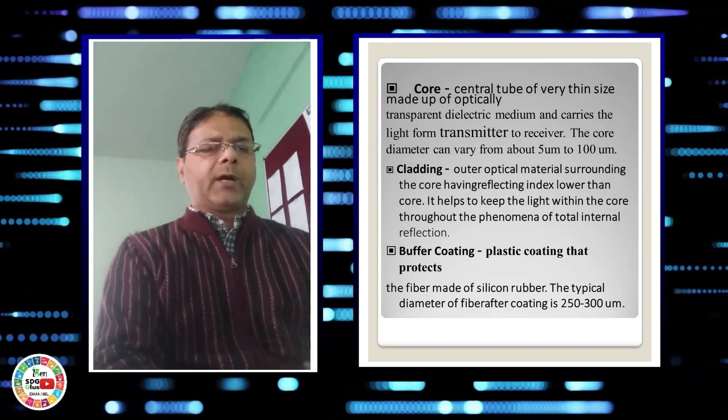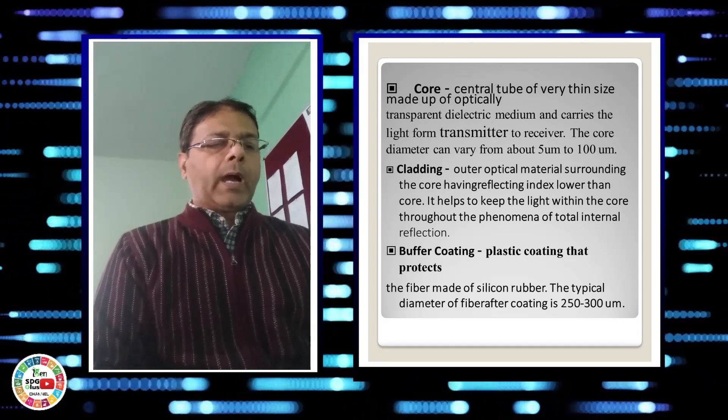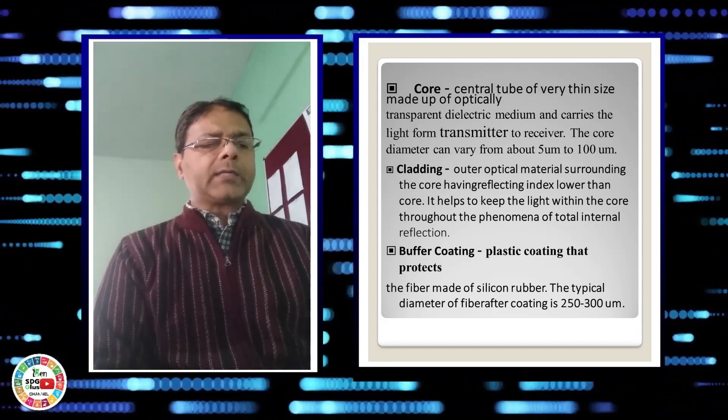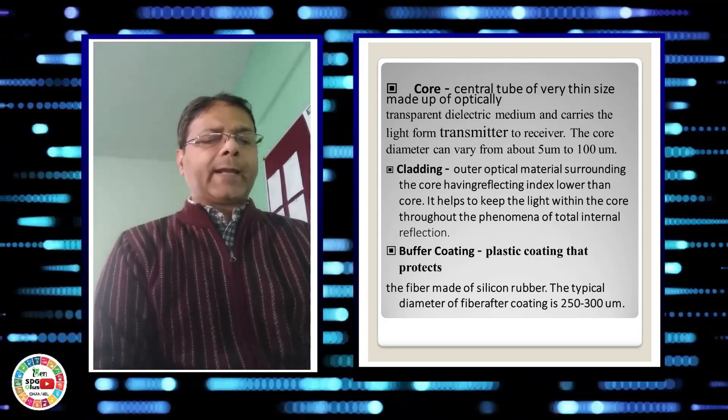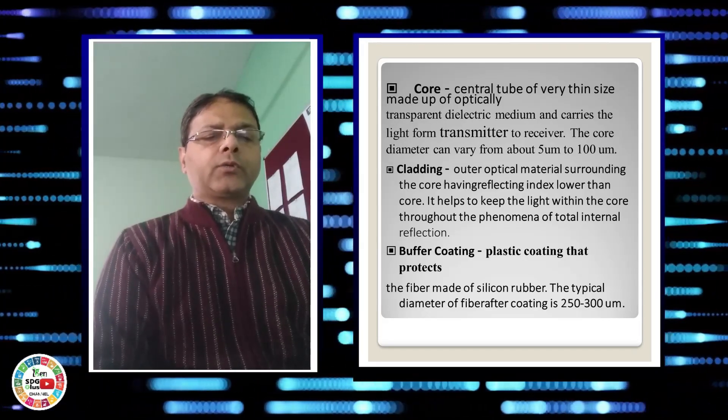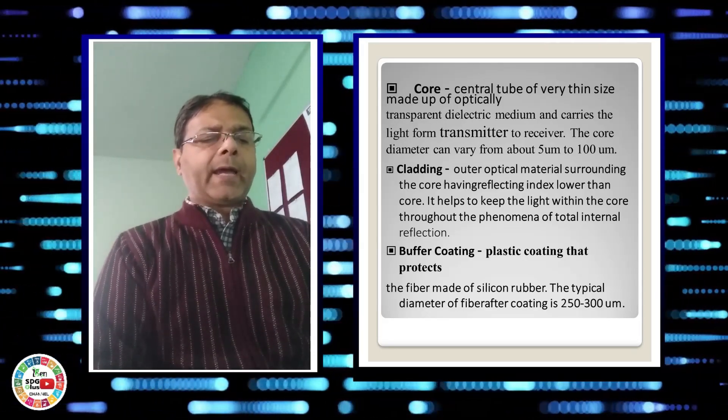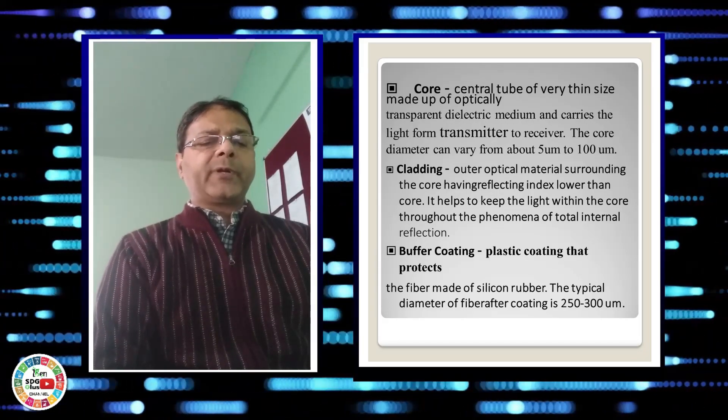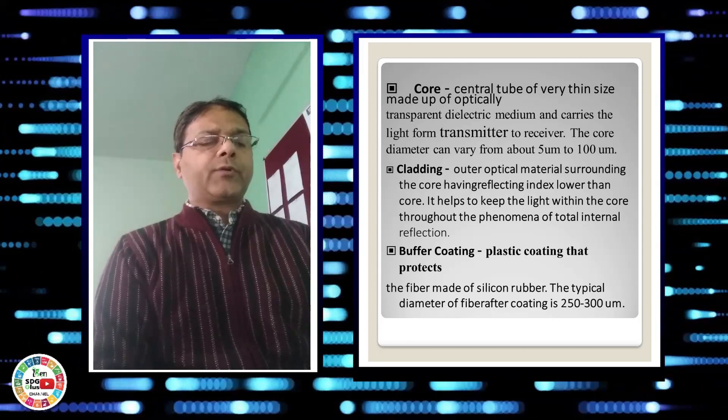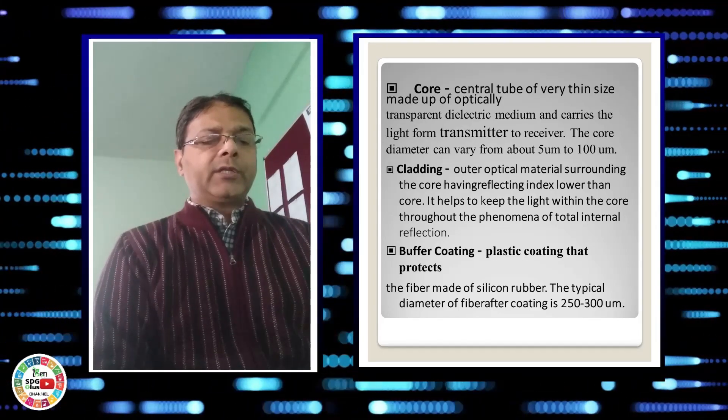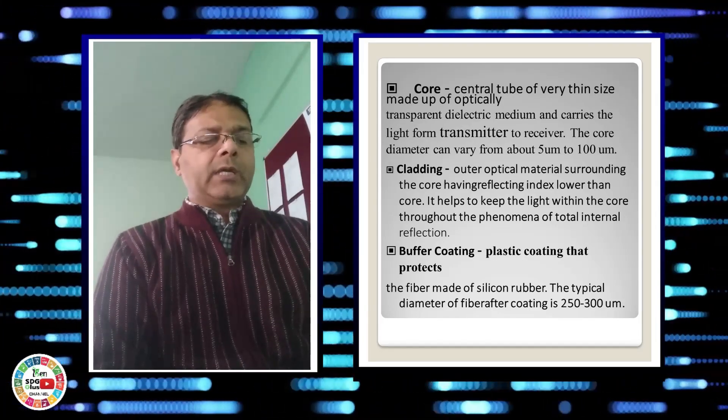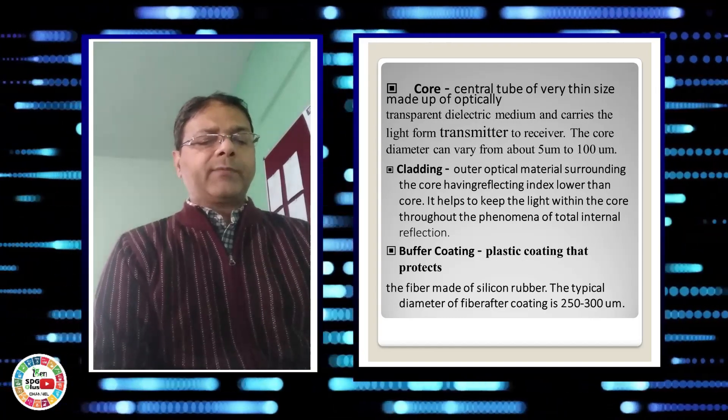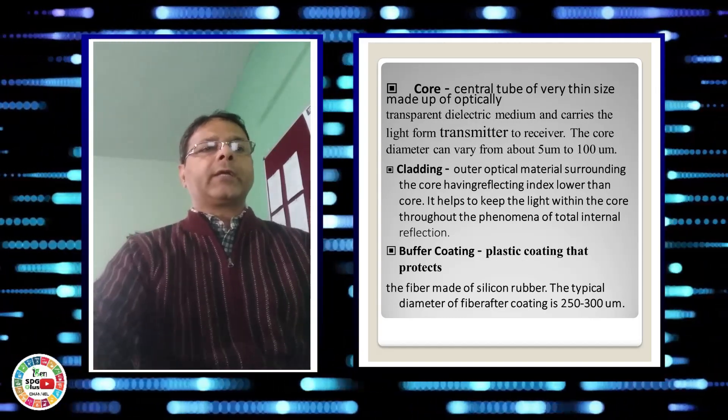The fibers which are used for optical communication are made up of either plastic or glass which are transparent dielectric, and light propagates through these dielectric. As we know, the speed of light in vacuum is 3 × 10^8 meters per second, but it is almost 3 × 10^5 kilometers per second. Therefore, speed of propagation of light is very high in optical fibers as compared to conducting wires.